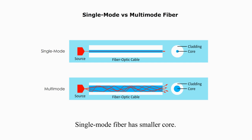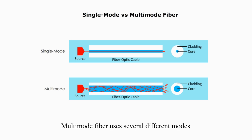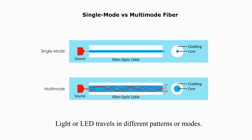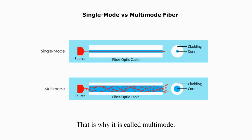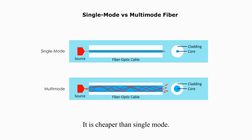Single-mode fiber has a smaller core. Laser light travels in a single mode, and single-mode fiber is good for long distance. Multi-mode fiber uses several different modes. When light travels inside the core, light or LED travels in different patterns or modes — that's why it's called multi-mode. It has modal distortion problems. Multi-mode fiber is good for short distance. It's cheaper than single-mode.